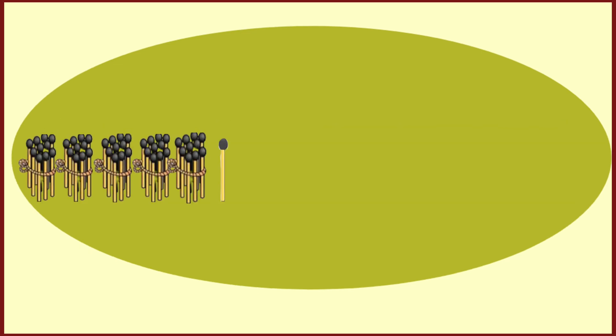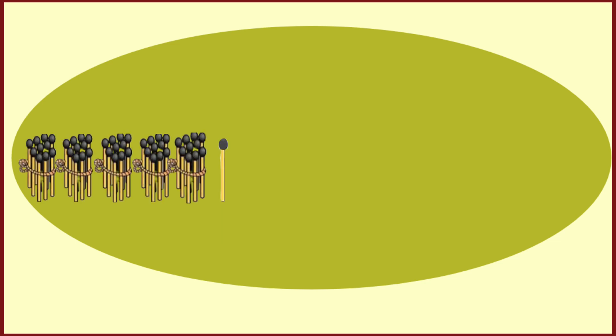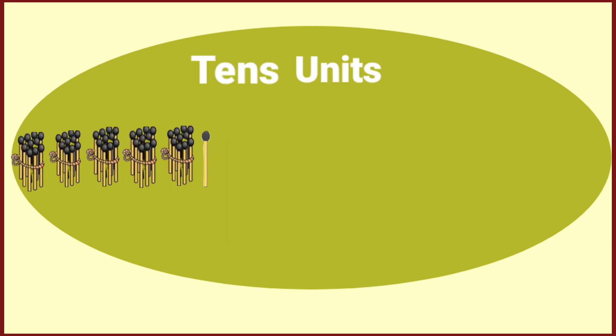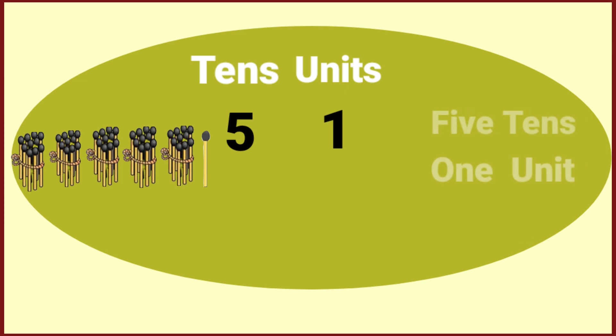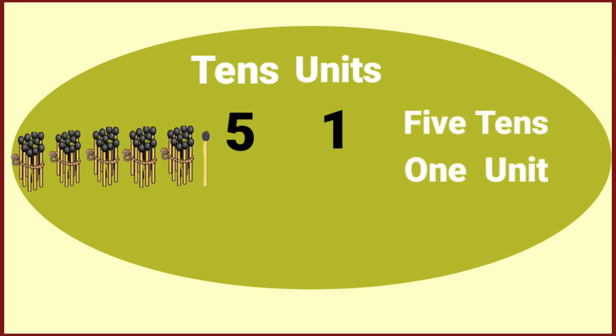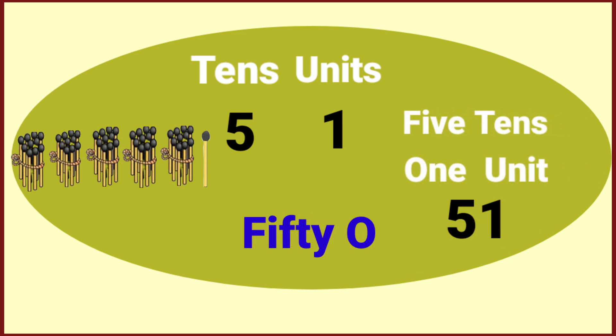Here are five bundles and one single matchstick, meaning five tens and one unit. So five tens and one unit makes fifty-one.